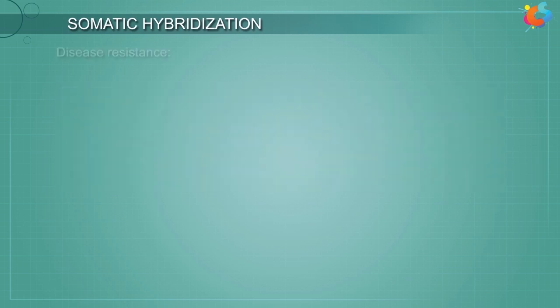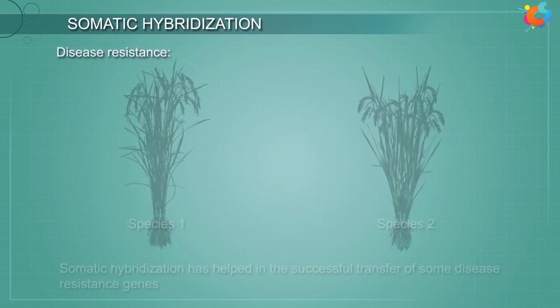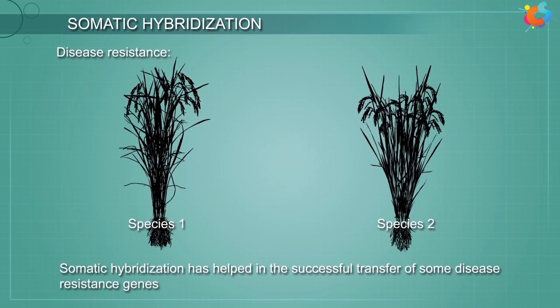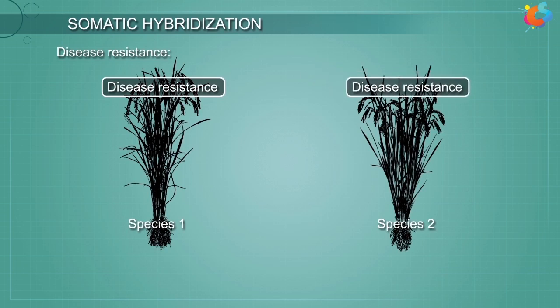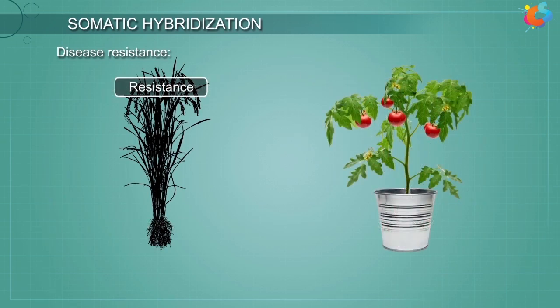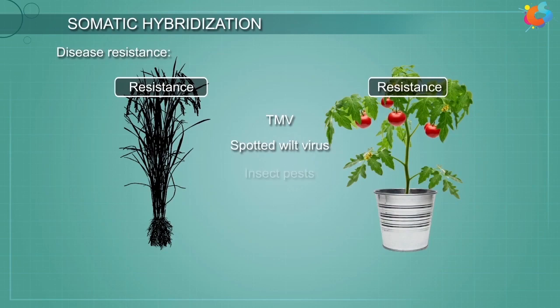1. Disease Resistance. Somatic hybridization has helped in the successful transfer of some disease resistance genes from one species to another. For example, resistance has been introduced in tomato against diseases such as TMV, spotted wilt virus, and insect pests.